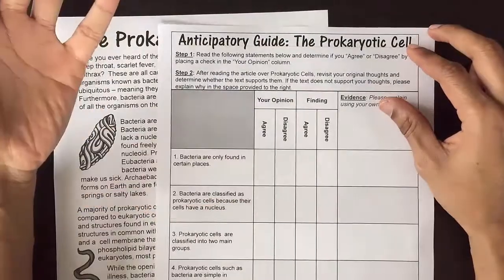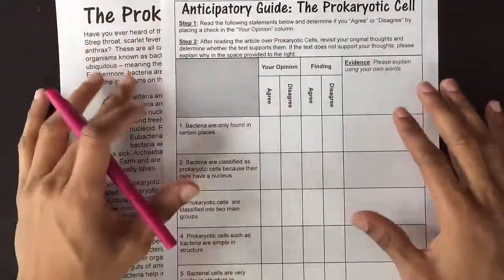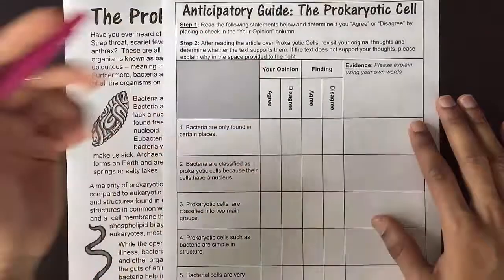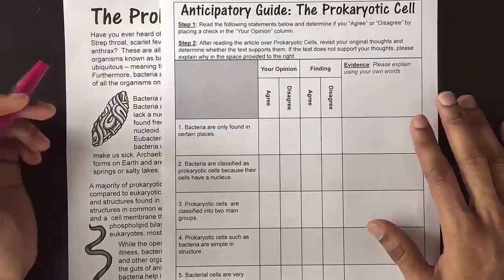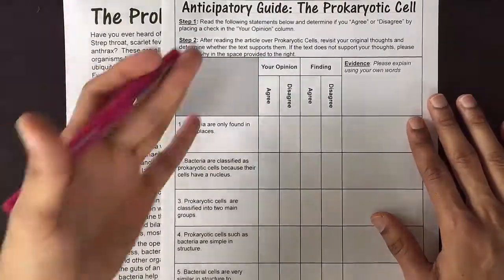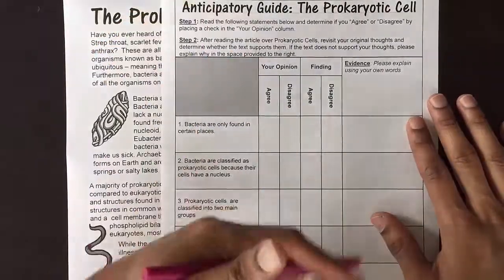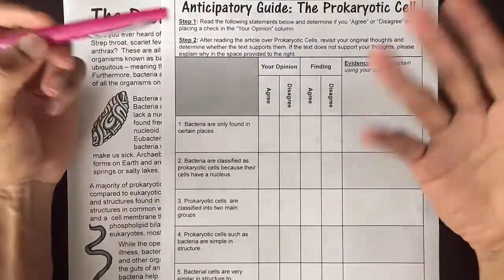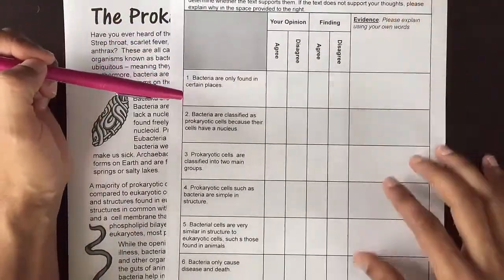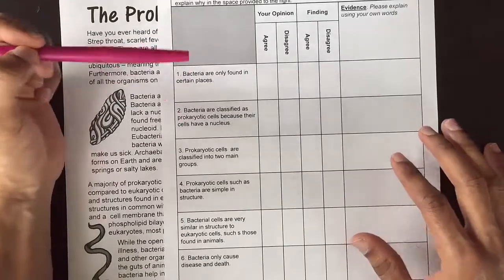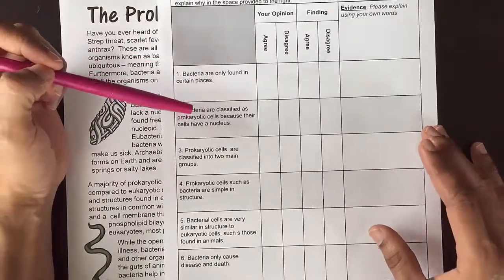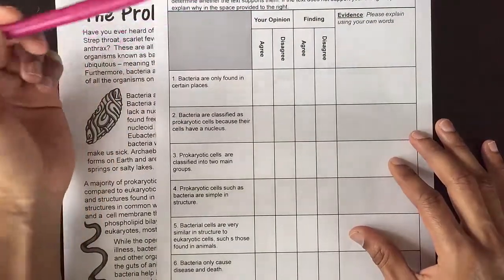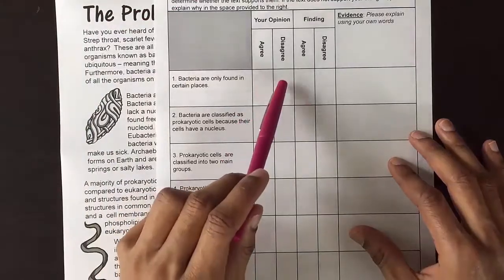As you see here, this is an example, but there are many different ways you can do it. The overall gist is that you give students this before they read a selected text. There are several statements — on this one there are six examples, some true, some false — and students go through and either check whether they agree or disagree with each statement.